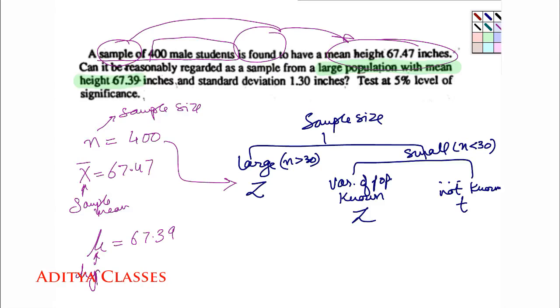This is hypothesized mean or population mean. So this becomes my hypothesized mean. And standard deviation - large population with mean this and standard deviation this. So another measure that I get over here is standard deviation which is 1.3 inches. So let's test. Test at 5 percent level of significance. Alpha is given as 5 percent.